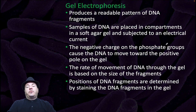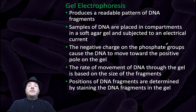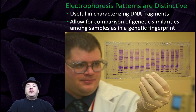Gel electrophoresis produces a readable pattern of DNA fragments. Samples of DNA are placed in compartments in a soft agar gel and subjected to an electrical current. The negative charge on the phosphate groups causes the DNA to move towards the positive pole. The rate of movement through the gel is based on the size of fragments. Positions of DNA fragments are determined by staining. The electrophoresis patterns are distinctive and useful in characterizing DNA fragments and allow for comparison of genetic similarities among samples, as in a genetic fingerprint.